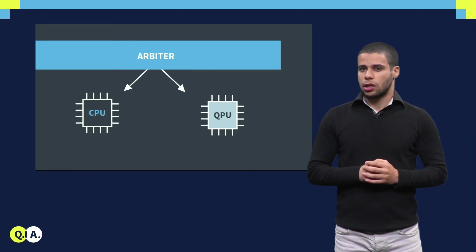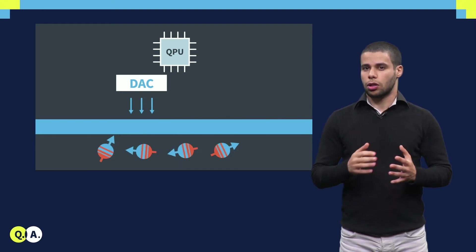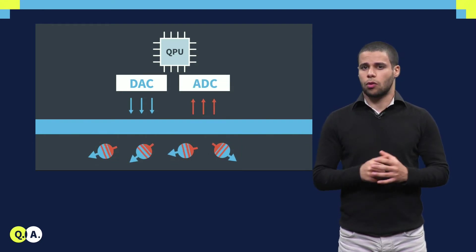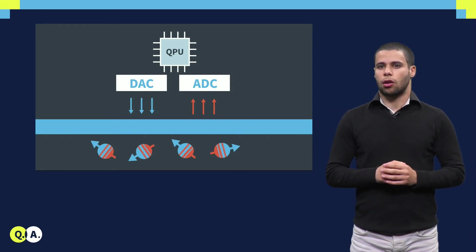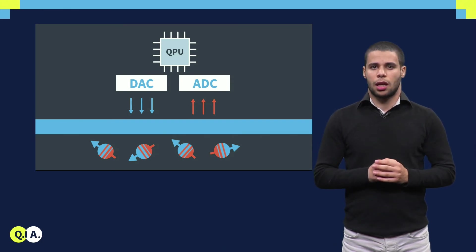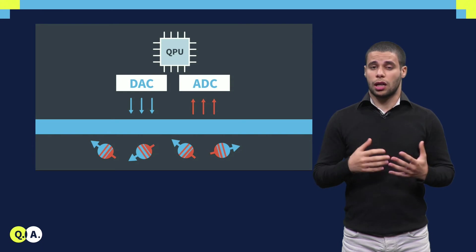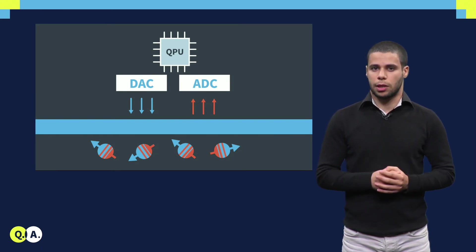Those instructions are then decoded and executed either on the host processor or on the quantum processor. One of the main tasks of the microarchitecture, or more specifically the quantum pipeline, is to translate the quantum instructions into analog signals which can be sent or applied to the qubits.